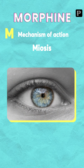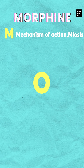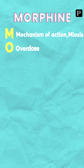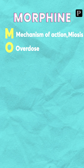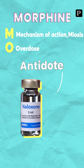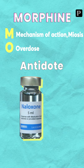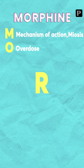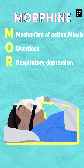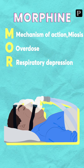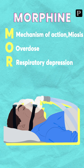The next importance of M is that it can cause miosis. The next letter is O — O stands for overdose. For morphine overdose, the antidote is naloxone, which is given IV. The next letter is R — R stands for respiratory depression, so when you give the drug at a high dose there is a risk of respiratory depression.